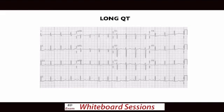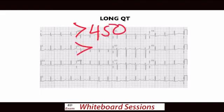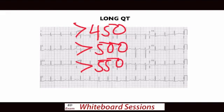Just quickly, what is too long for a QT? Generally, because it varies with rate it is variable, but for your average adult, greater than about 450ms is probably pathological. If you see a QT greater than 500, then it's most likely going to be abnormal, and if you get more than 550 to 600, you need to start getting very worried about that patient and start implementing some treatment to shorten their QT and treat any underlying cause.